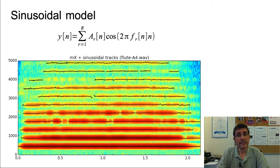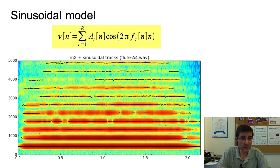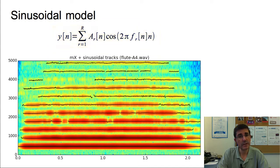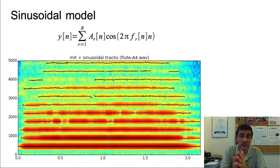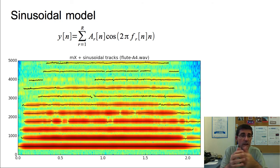As we showed in the last lecture, the sinusoidal model considers that the sound is the sum of time-varying sinusoids, expressed by an equation in which the output signal is the sum of time-varying sinusoids. A good way to show the results of the analysis is to plot the frequencies of the time-varying sinusoids on top of the magnitude spectrogram of the sound. Each sinusoid, apart from the frequency, also has magnitudes and phases which are not shown.